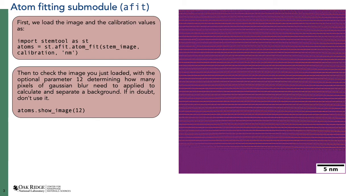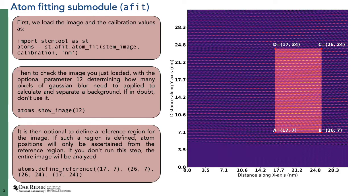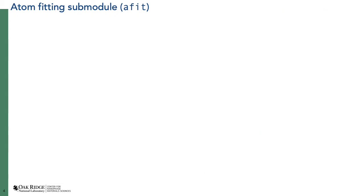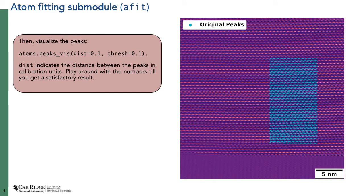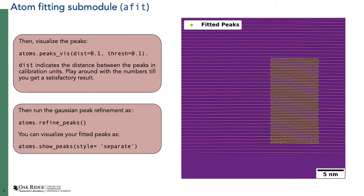The right side shows the show_image output of the image that will be fitted. Sometimes you do not want to fit atoms over the whole field of view, so you can call atoms.define_reference and give the four corners as positional arguments, and atom fitting will only work inside that reference region. This work came out as a PRM paper last year. You then call peaks_vis with two positional arguments: the distance between peaks in nanometers and the thresholding value. After you are happy with those values, you run refine_peaks. On a four-core MacBook (a 2018 Intel system) it took around 200 seconds to refine around 1500 atoms, which is fast enough.